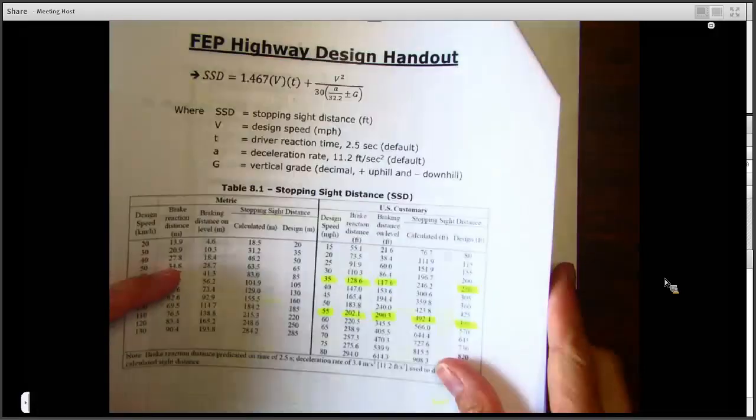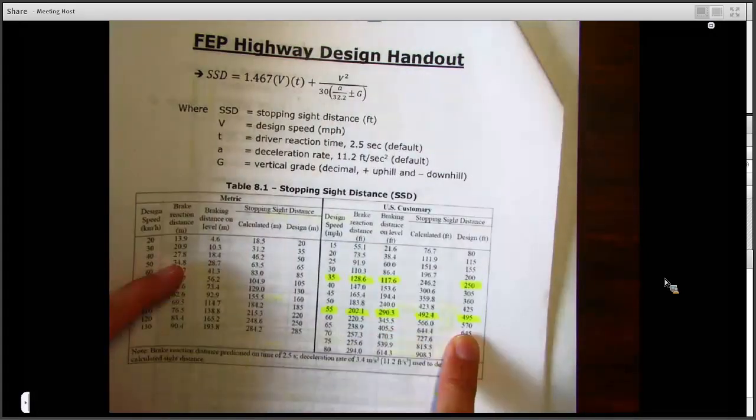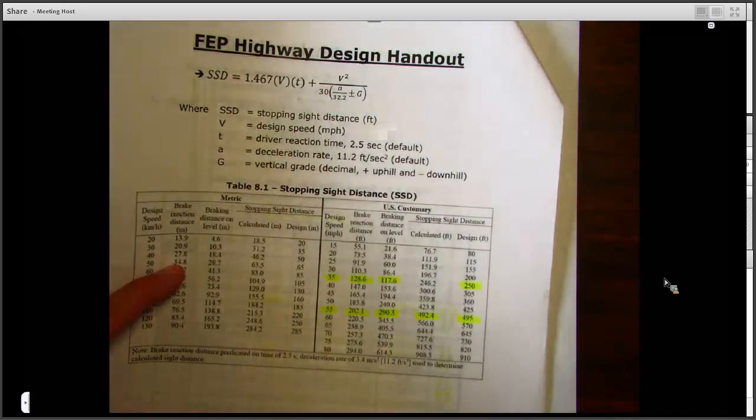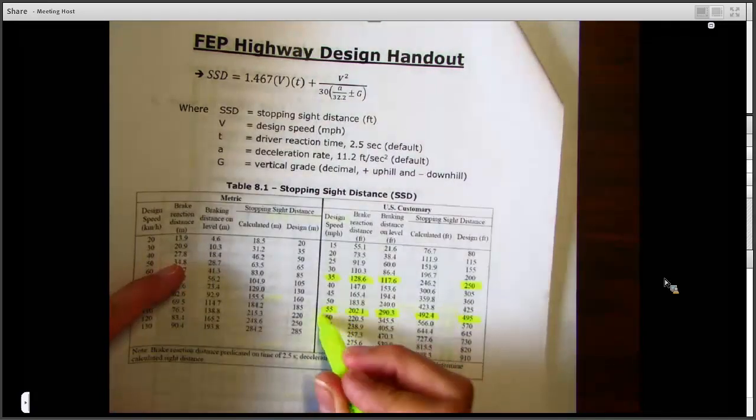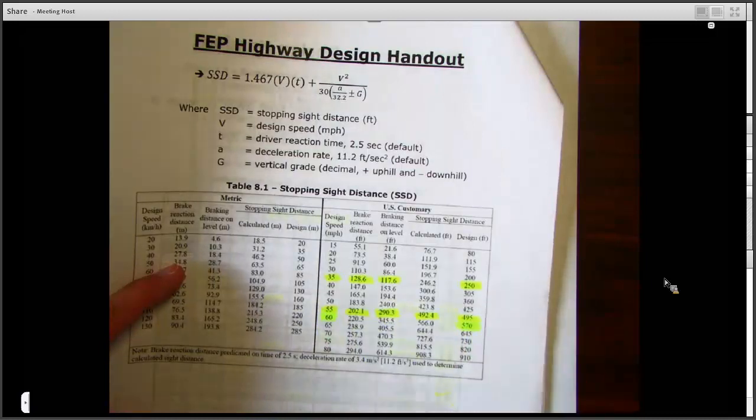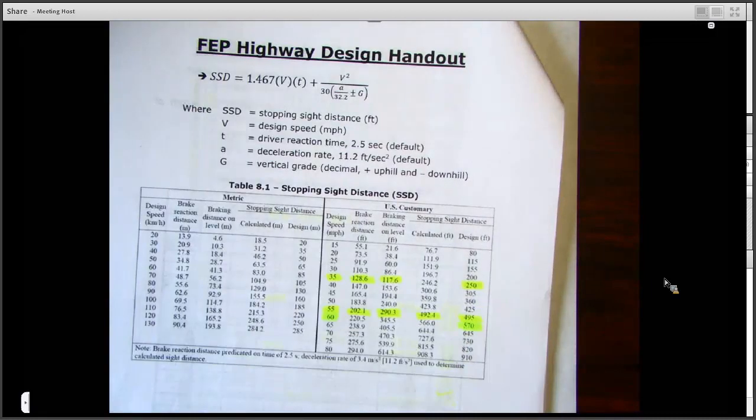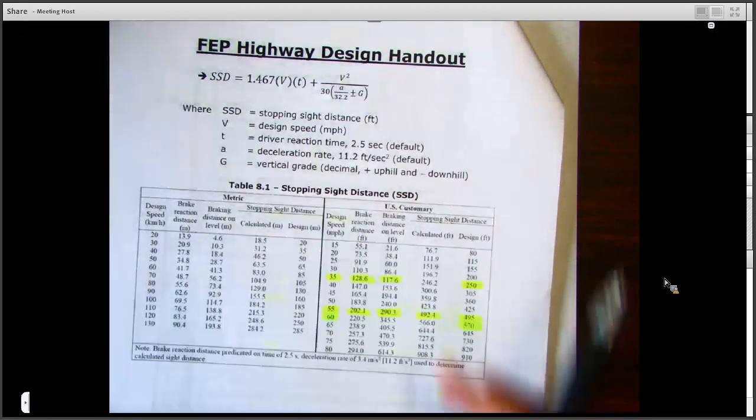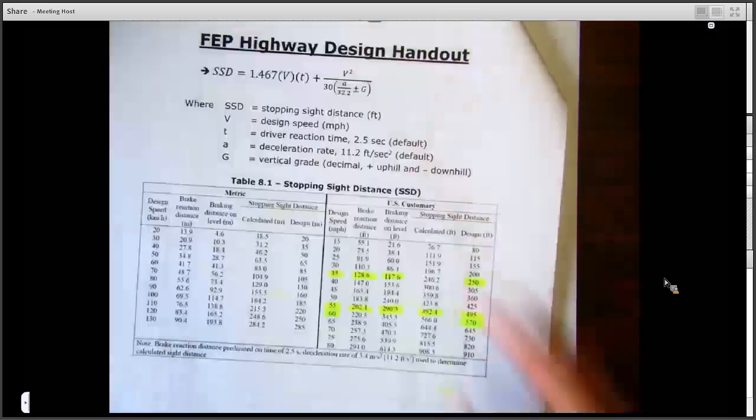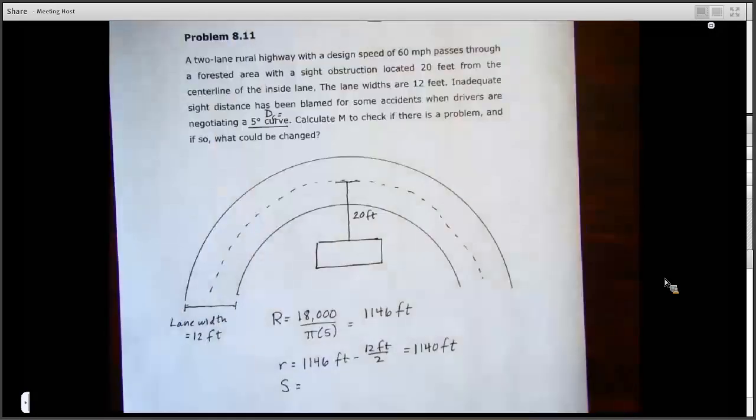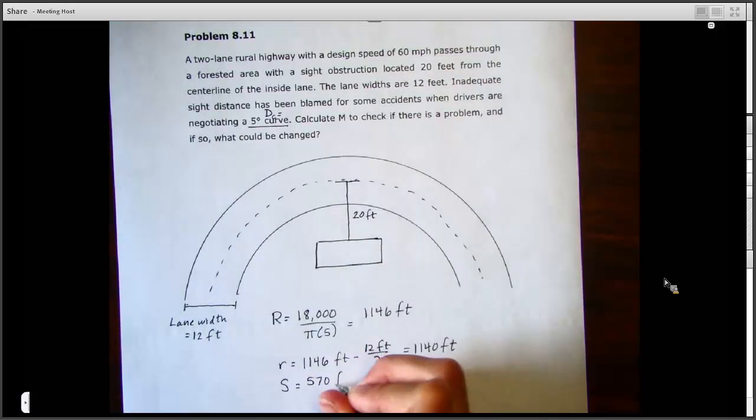So when we find our 60 miles per hour here, we'll go across to find our stopping sight distance, and that's going to be 570 feet for level terrain. We're just going to assume that and use that here.